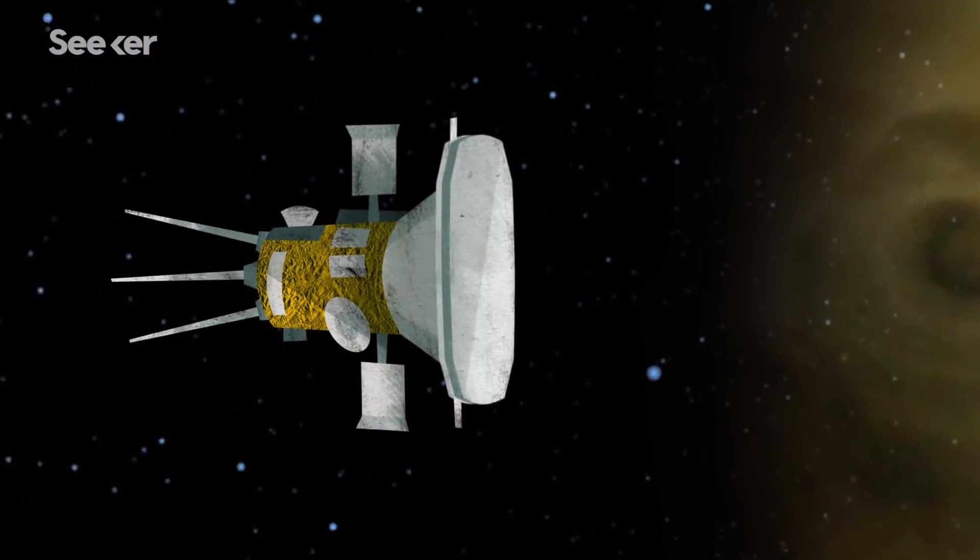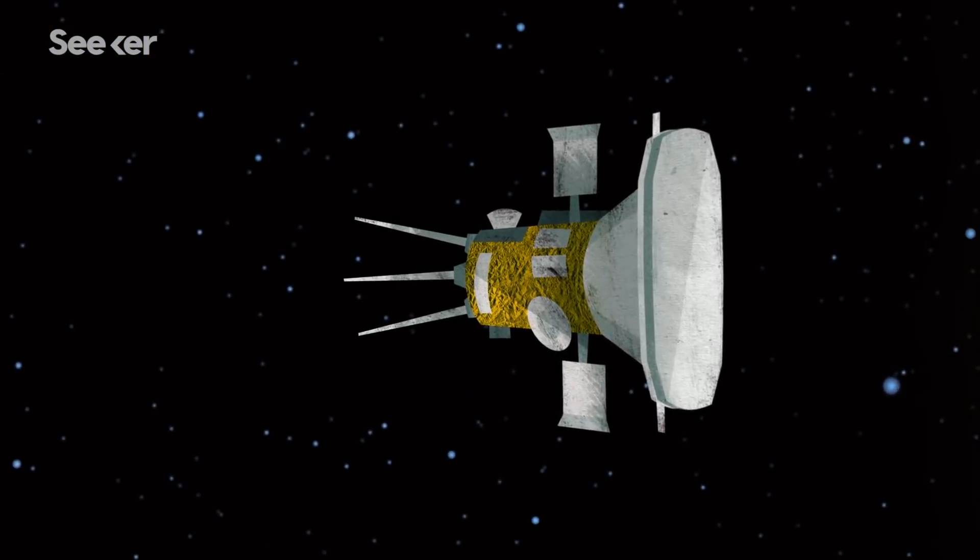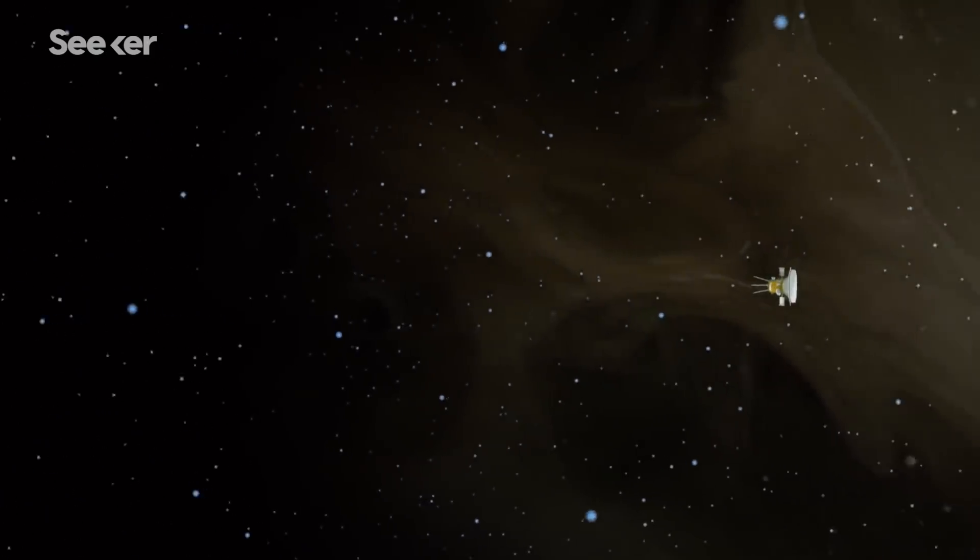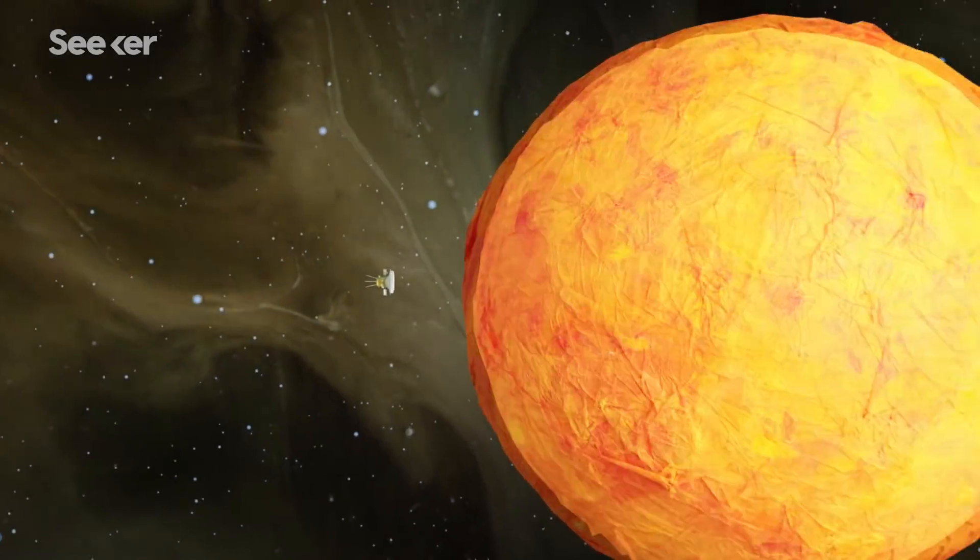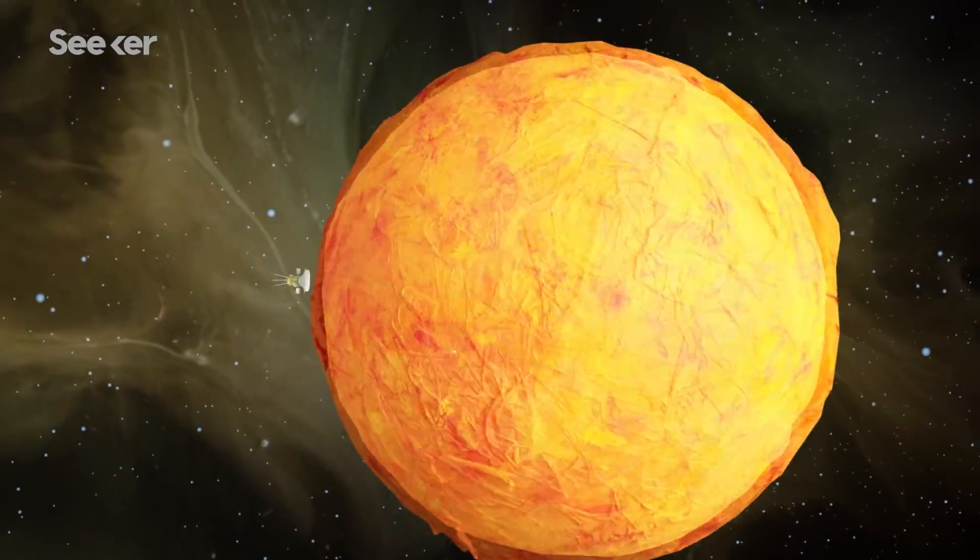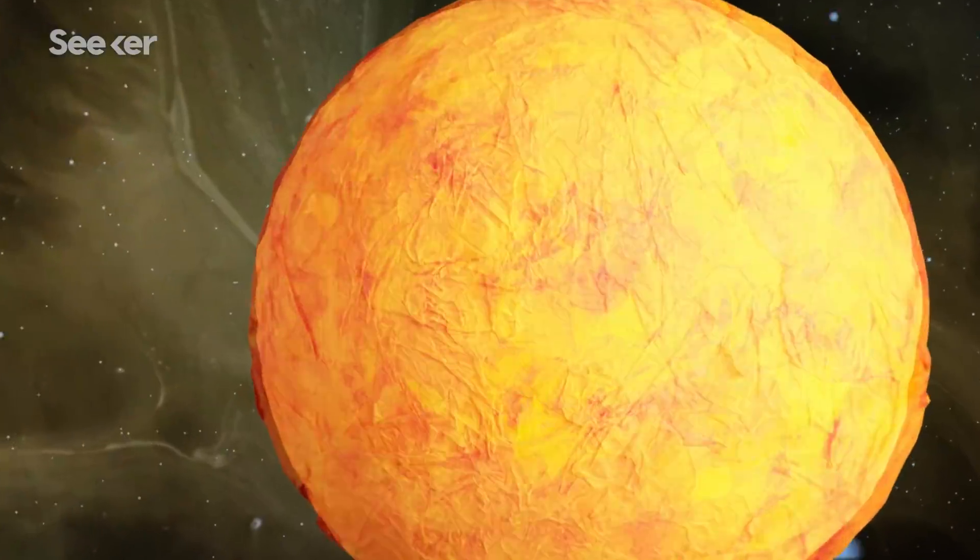And that's why the Parker Solar Probe is so crucial. The spacecraft will orbit the Sun 24 times, coming as close as 5.9 million kilometers and moving as fast as 690,000 kilometers per hour.